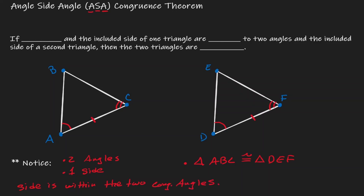Essentially, what we're saying is that if two congruent angles and the included side of one triangle are congruent to two angles and the included side of a second triangle, then we can claim that the two triangles are congruent.